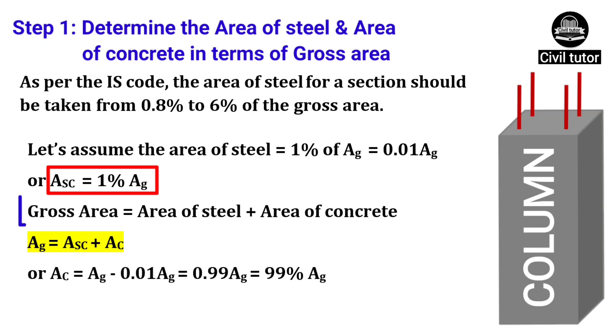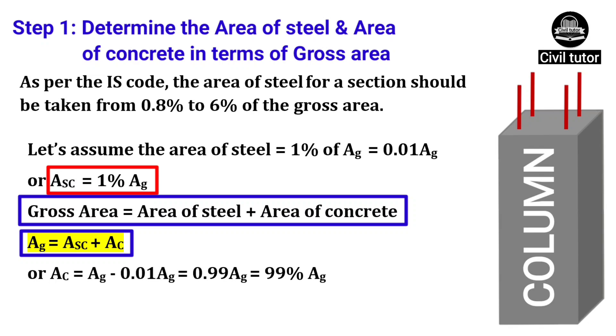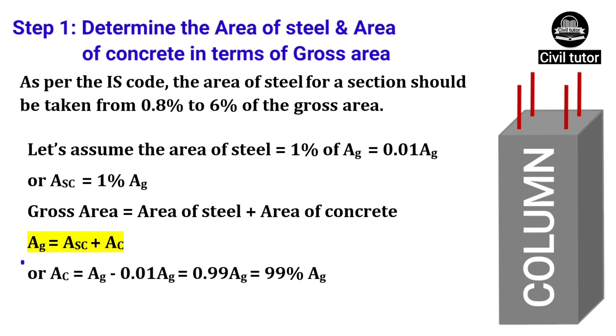As we know, gross area is equal to area of steel plus area of concrete or AG will be equal to ASC plus AC. On simplifying further, AC will be equal to 99% of AG or 0.99 AG.